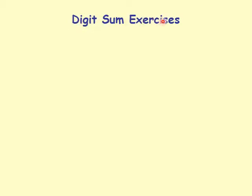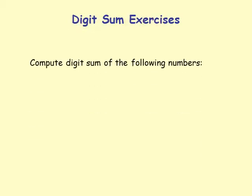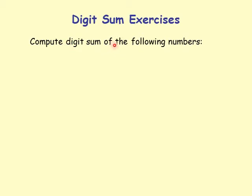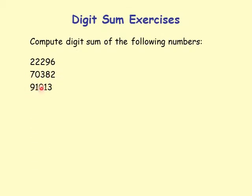Compute digit sum of the following numbers: 22296703829101373142 and some more.